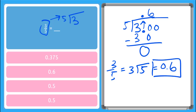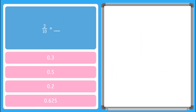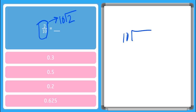And that is the decimal that is equivalent. So now I have another example where I need to convert 2 tenths to a decimal. Remember, the first thing I do is convert this into a division problem. So I'm going to say 10 goes into 2 how many times? When I write that out, I see again I have that problem because my dividend is smaller than my divisor, so I have to add my decimal point and some trailing zeros.